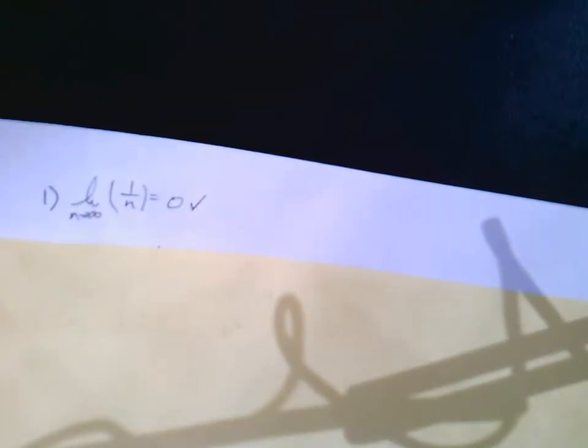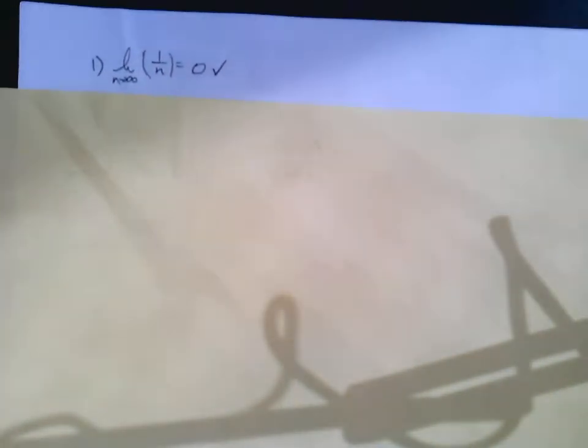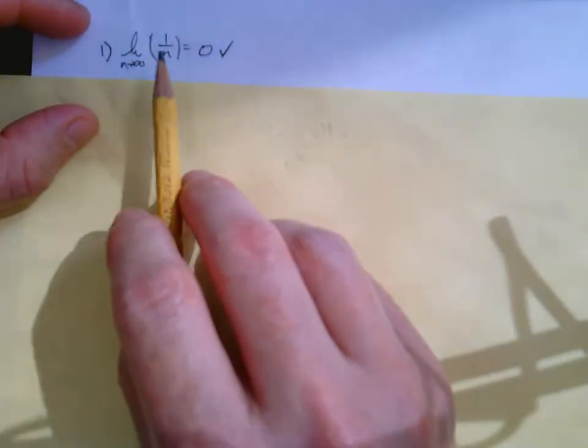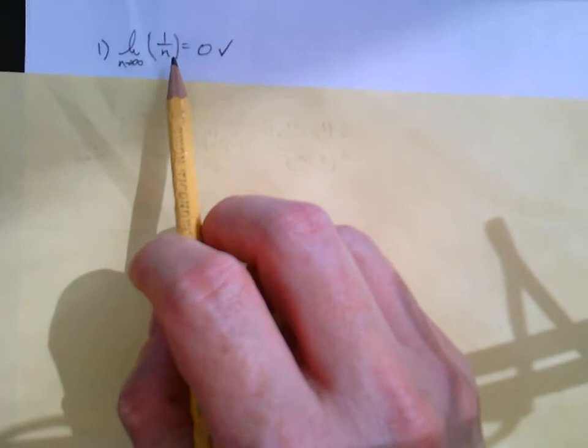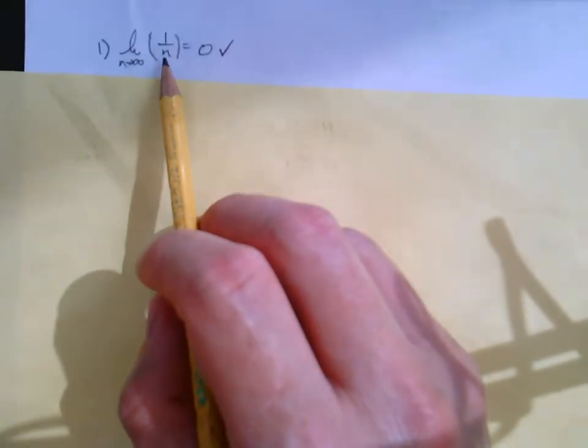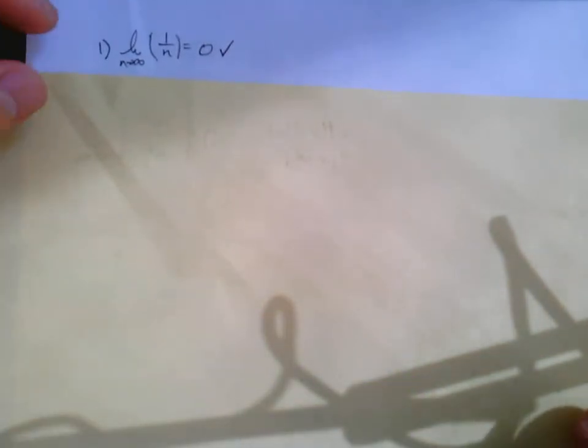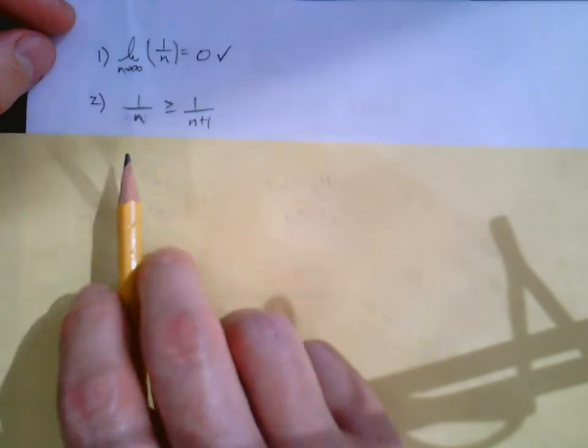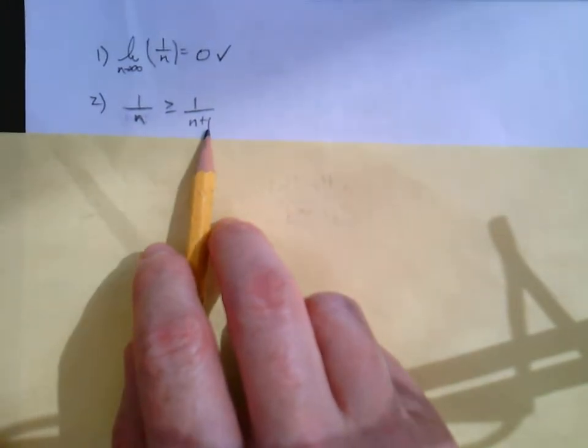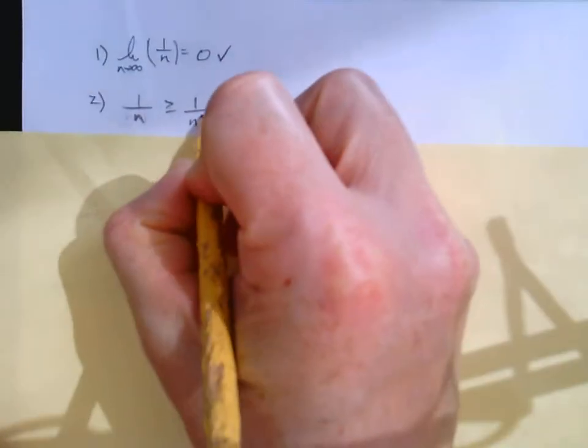Condition number 1 of the alternating series test is to take the limit as n goes to infinity. And for our non-alternating part of our nth term, 1 over n, yes, we do get 0. Check. The second part of the alternating series test is that the nth term is greater than or equal to the n plus 1th term. Well, that's fairly simple here.